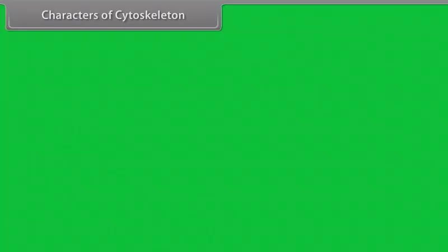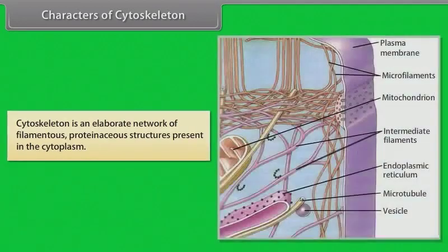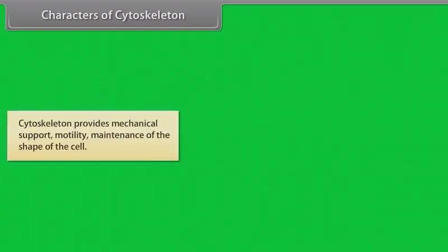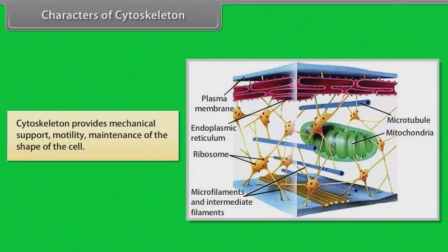Characters of cytoskeleton: Cytoskeleton is an elaborate network of filamentous, proteinaceous structures present in the cytoplasm. Cytoskeleton provides mechanical support, motility, and maintenance of the shape of the cell.